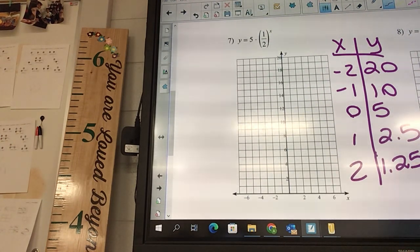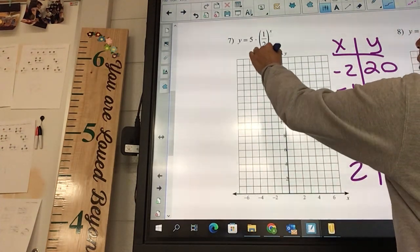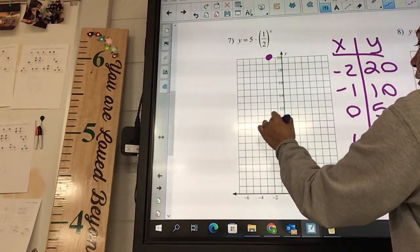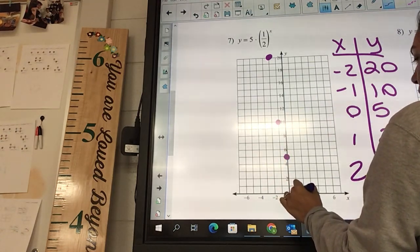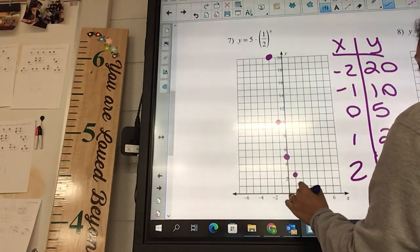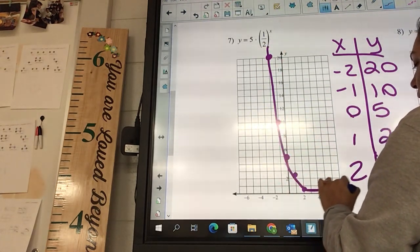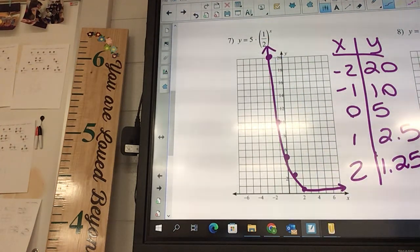So we're at negative 2, 20. It's going to be here. Negative 1, 10. 0, 5. 1, 2.5. And 2, 1.25. And then last but not least, look at number 7. What is the Y-intercept? 5.